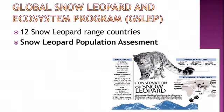Global Snow Leopard and Ecosystem Programme (GSLEP) is an alliance of all 12 snow leopard range countries. Snow leopard is present in India, Nepal, Bhutan, China, Mongolia, Russia, Pakistan, Afghanistan, Kyrgyzstan, Kazakhstan, Tajikistan, and Uzbekistan — that is, South Asian and Central Asian countries.